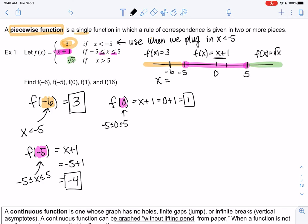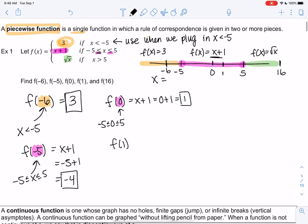And then we're going to do 1, which is also in the pink category. And then we're going to do 16, which would be way over in the green category. So f of 1, 1 is still in between negative 5 and 5. So the rule is you can only use one of the rules. You can't plug into all three. We only need a single output. So it's really important that you pick the correct piece. So it'll be x plus 1. In this case, it'll be 1 plus 1, which is 2.